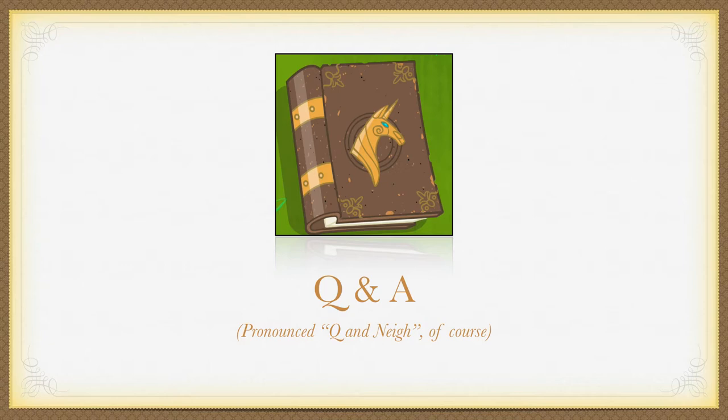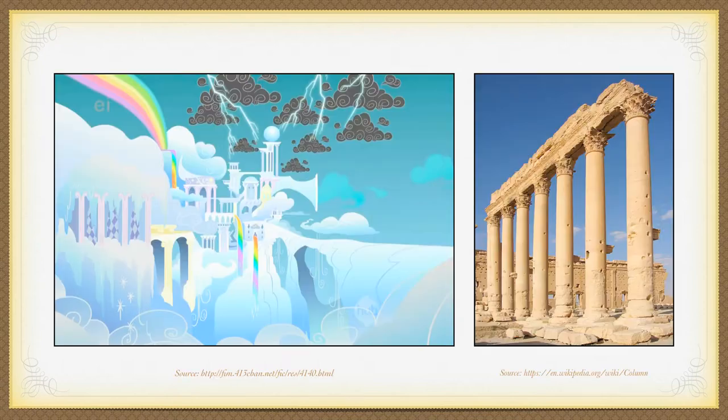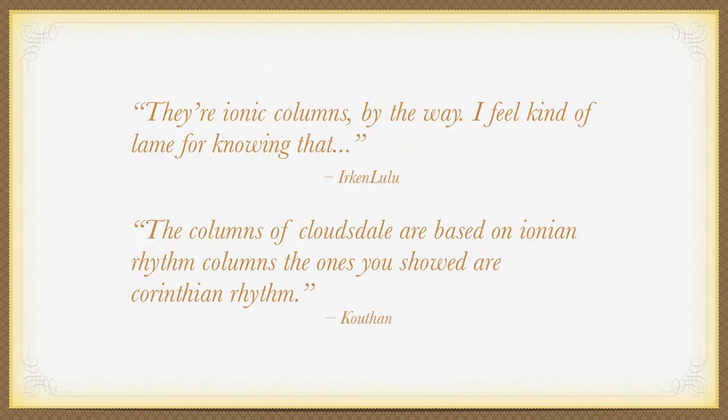Let's get started with those damn columns — the ones I couldn't, or more accurately wouldn't, identify. Urkenlulu writes they're Ionic columns, by the way — I feel kind of lame for knowing that. Similarly, Cuthan also writes: the columns of Cloudsdale are based on Ionian rhythm columns; the ones that you showed are Corinthian rhythm. Don't feel lame, Urkenlulu — if anything I should feel lame for not knowing in the first place. To both of you, though, I'm prepared to take your word for it.